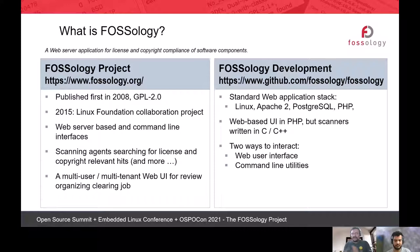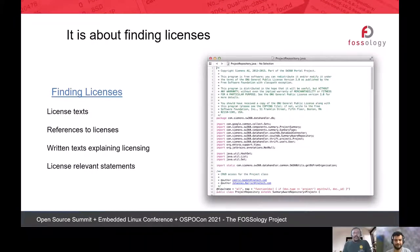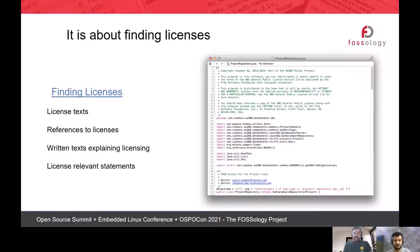In 2015 it became a Linux Foundation collaboration project. It's a multi-user, multi-tenant web UI for review and organizing your clearing jobs. FOSSology's development stack uses C++, PHP, and PostgreSQL as the backend. FOSSology has multiple agents — if you have any archive for a software you can upload it to FOSSology, and it runs its agents through your archive to find different interesting things.